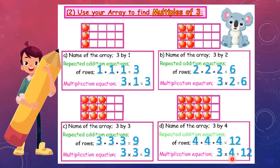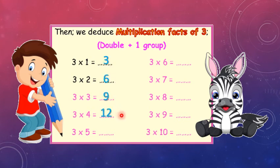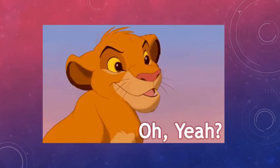Now let's complete the rest of these arrays in your packet. Then complete this table using the double plus 1 group strategy, the finger strategy, or the skip counting strategy — whichever you prefer. From 3 × 1 up to 3 × 10: 3, 6, 9, 12, 15, 18, 21, 24, 27, and 30. Good job! Excellent work.